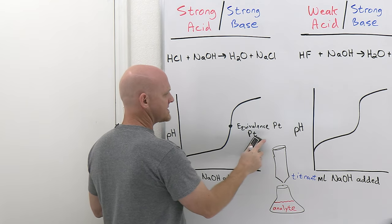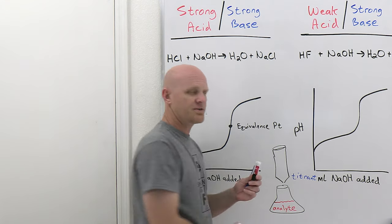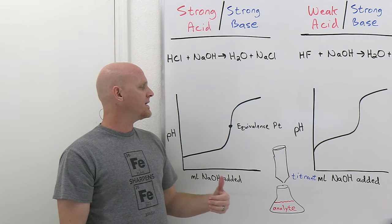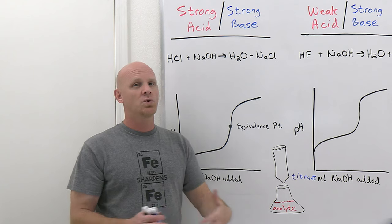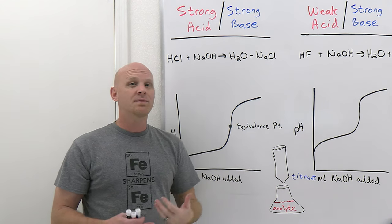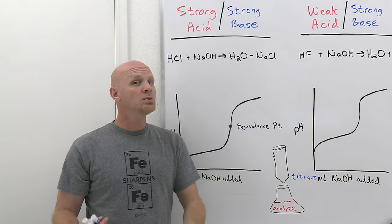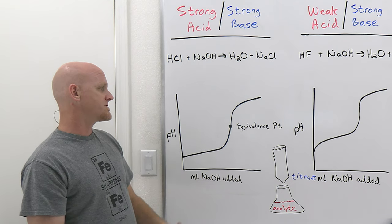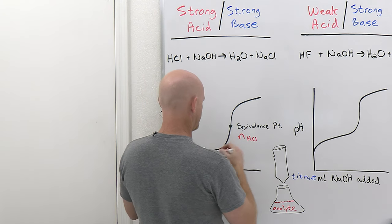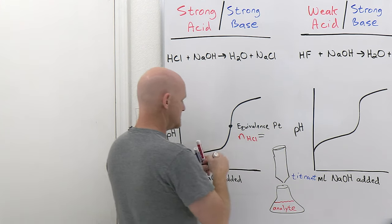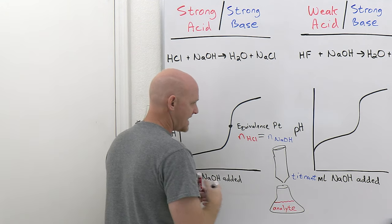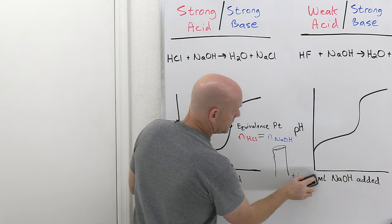This is the equivalence point — sometimes shortened to EQ point. A lot of students forget it's the equivalence point, not the equilibrium point. What we mean by equivalence point is the point at which you've added a chemically equivalent amount of acid or base. Since HCl and NaOH react in a one-to-one ratio, a chemically equivalent amount just means an equal number of moles — an equimolar amount of NaOH to our HCl. The moles of HCl are going to equal the moles of NaOH right at and only at that equivalence point.